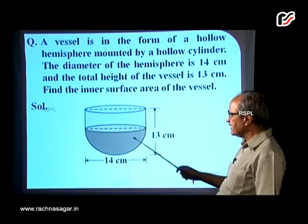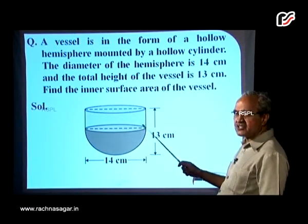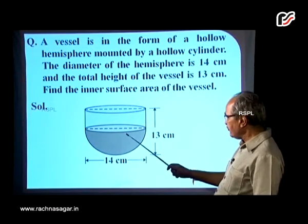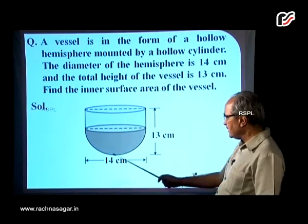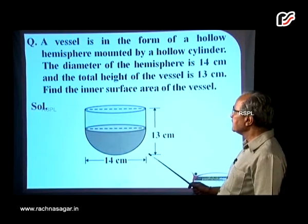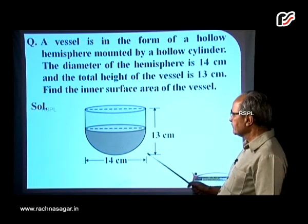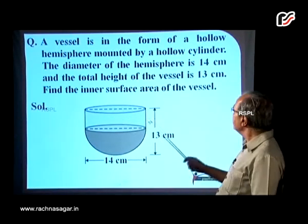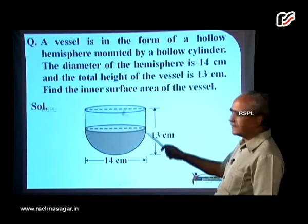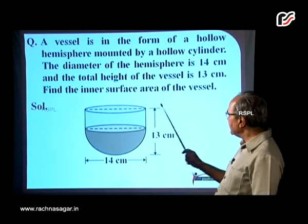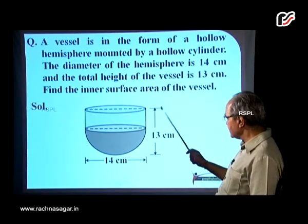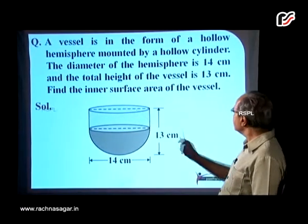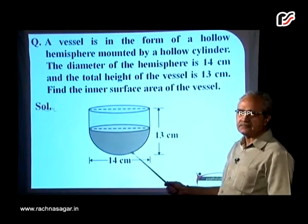As we first draw the figure, we can see the vessel is in the form of a hemisphere of diameter 14 centimeters. On this hemisphere is mounted a hollow cylinder, and the total height of the vessel is 13 centimeters. So we have to find the inner surface of the vessel.